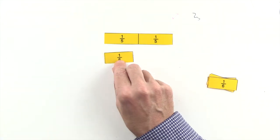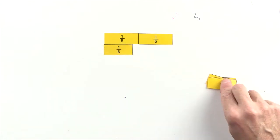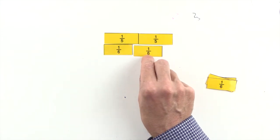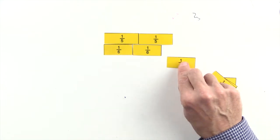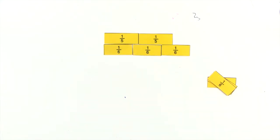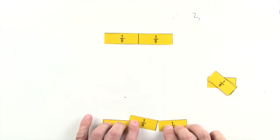One-sixth. And two-sixths are less than two-fifths, and three-sixths are greater than two-fifths, so we can't use sixths to make an equivalent fraction to two-fifths.